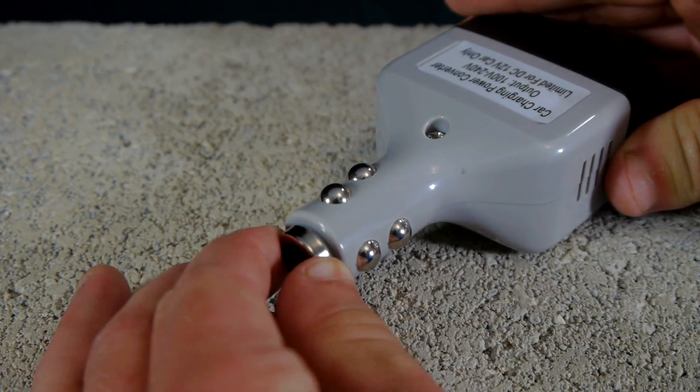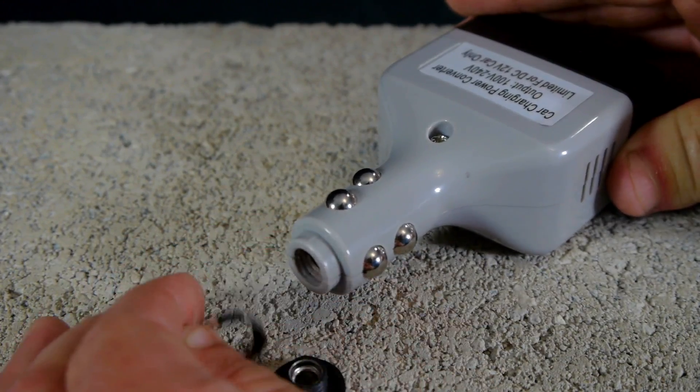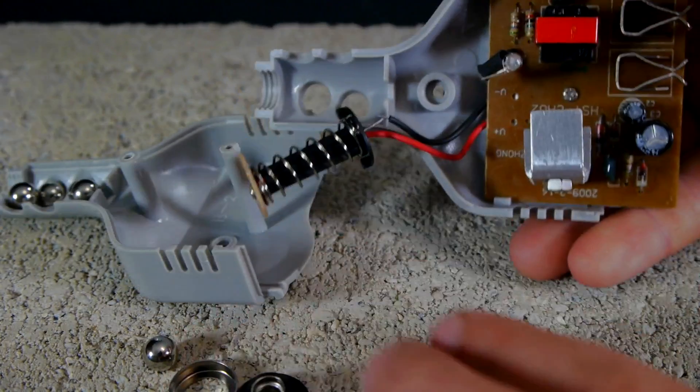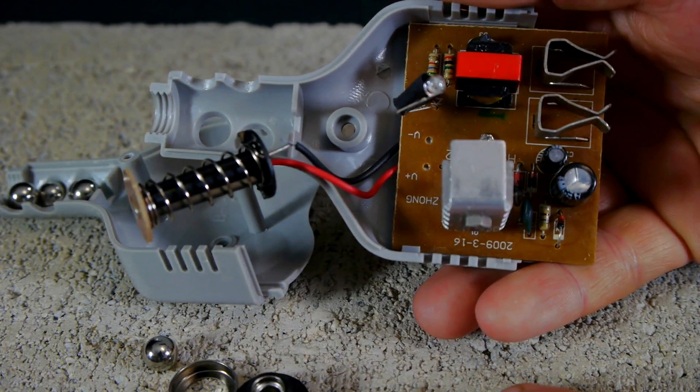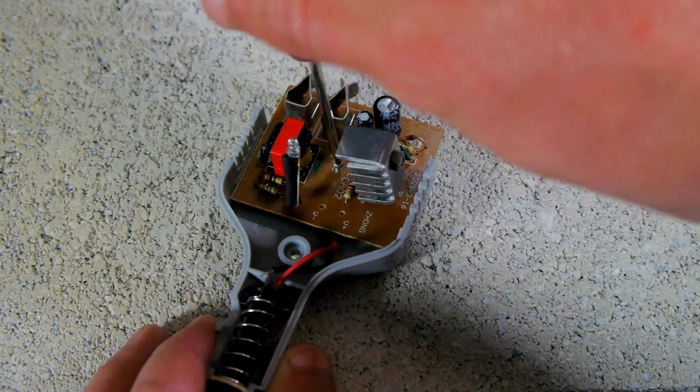The converter is first taken apart so that we can see the internal components. The circuit board should be easily removed simply by extracting one or two screws.